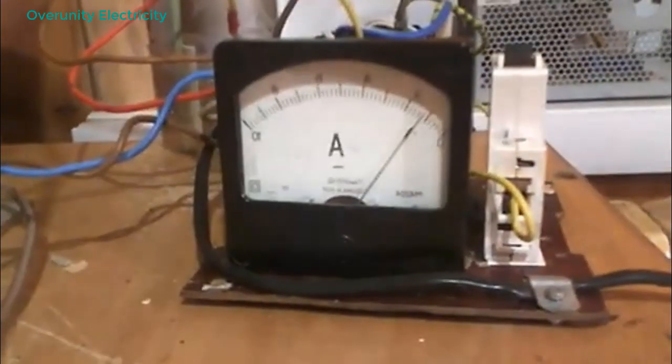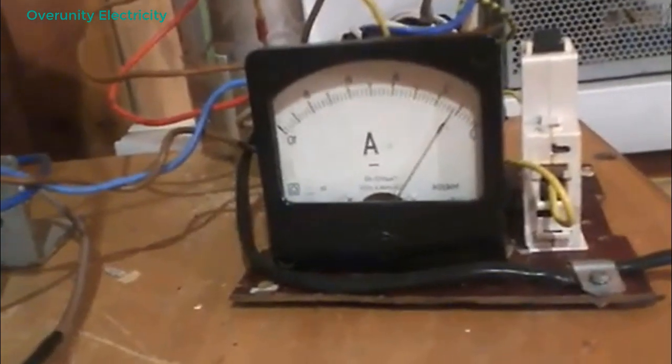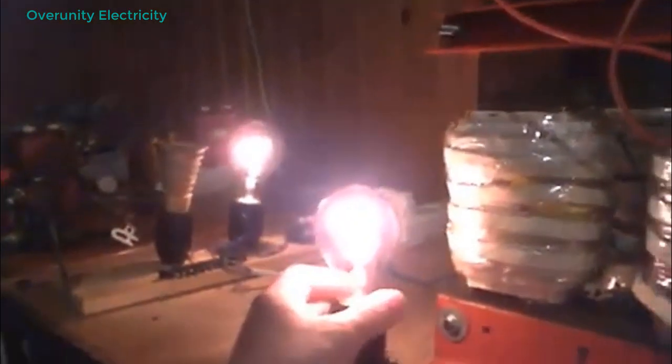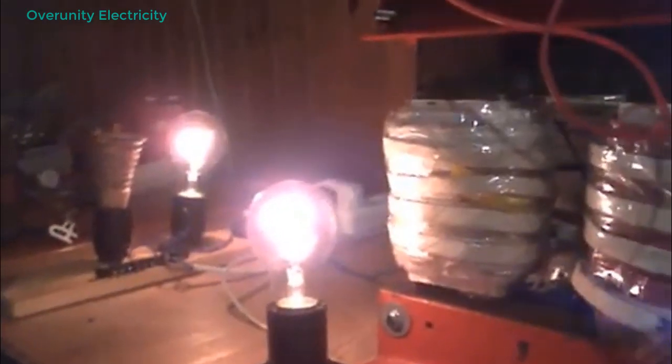His construction consists of 12 plastic pipes, each 20 millimeters in diameter, arranged into a rigid rectangular frame. Four pipes at the top, four at the bottom, and four as vertical supports. These pipes are not hollow. They are packed with ferrite powder, which significantly enhances their high-frequency magnetic properties.